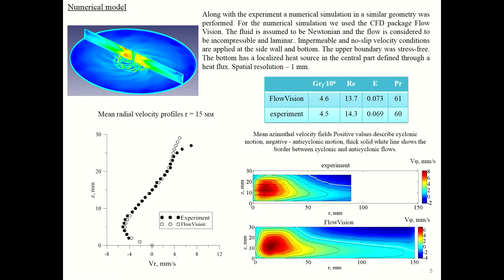For studying the helicity distribution, we need to have three-dimensional velocity fields, but it's quite difficult. There are some experimental techniques, for example tomographic particle image velocimetry, but they are very expensive and resource demanding. So general results were received by using numerical CFD package Flow Vision. The integration domain was a cylindrical cavity with sizes the same as experimental. The fluid is assumed to be incompressible and Newtonian. The upper layer was stress-free, the bottom has a localized heat source, and all boundary conditions were chosen close to experiment.